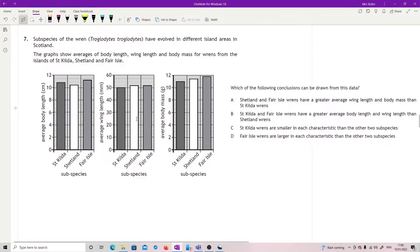Question seven: subspecies of the wren have evolved in different island areas in Scotland. The graph shows averages of body length, wing length, and body mass for wrens from the islands of St Kilda, Shetland, and Fair Isle. It's not particularly complicated graphs but there are three of them you have to move between, which is what makes it your level. Which of the following conclusions can be drawn from this data? Shetland and Fair Isle wrens have a greater average wing length and body mass than St Kilda wrens. Let's have a look at this. We are looking at average wing length, so your average wing length is here. What they're saying is Shetland and Fair Isle have a greater average wing length than St Kilda - that's true. And body mass than St Kilda, so your body mass is over here, and that is true as well. So the answer is A.